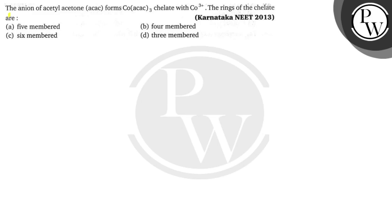The question asks: the anion of acetyl acetone (ACAC) forms a chelate Co(ACAC)₃ with Co³⁺. How many members does the chelate ring have? We will understand the complex formed by the anion of acetyl acetone with Co³⁺, and determine the size of the chelate ring.